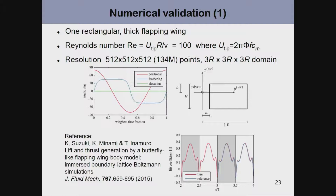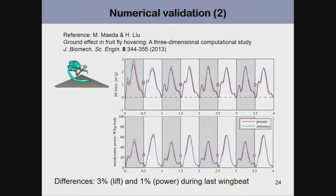For numerical validation, on a simple example — a rectangular wing moving back and forth with prescribed angles — I compare with a previous study using a lattice Boltzmann method, and the agreement is quite good. A more complex case is a fruit fly hovering; I compute the vertical force and aerodynamic power. After a transient due to the impulsive start, the agreement is quite good, with less than 3% and 1% difference in mean force and power respectively.